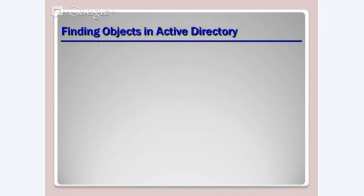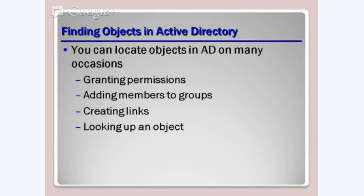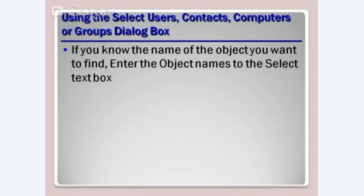Anything you do within Active Directory — create an organizational unit, create a container, any of it — it's the same process. Finding objects can get more complex depending on the size of the organization. If you have 100 users, finding Jenny Jones shouldn't be difficult. If you have 500,000 users like a company the size of GM, you might have a little more problem. You can locate objects in Active Directory on many occasions — to grant permissions, add members to groups, create links, or look up an object. If you know the name of the object, enter it in a text box and search.